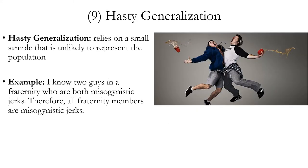Hasty generalization is an argument that relies on a small sample — too few examples — that are unlikely to represent the whole group or population that a generalization is supposed to apply to. Here's an example: I know two guys in a fraternity who are both misogynistic jerks. Therefore, all fraternity members are misogynistic jerks.